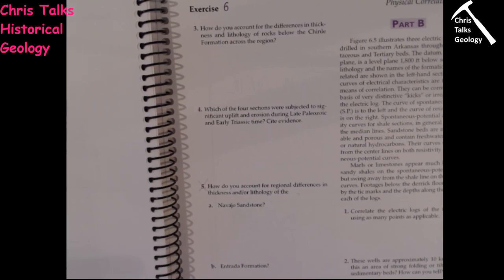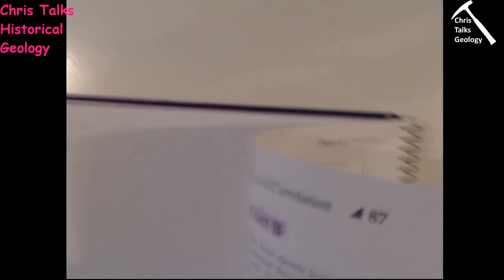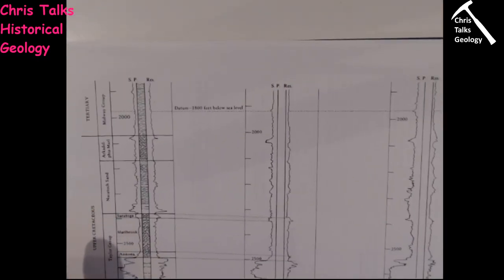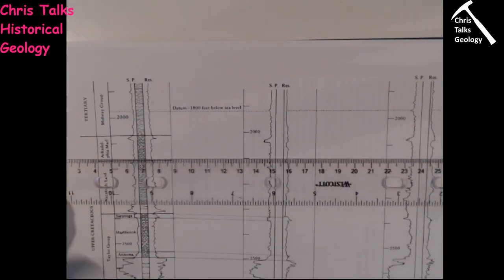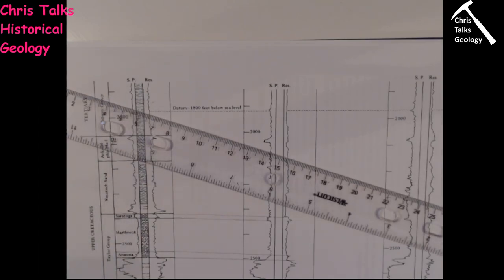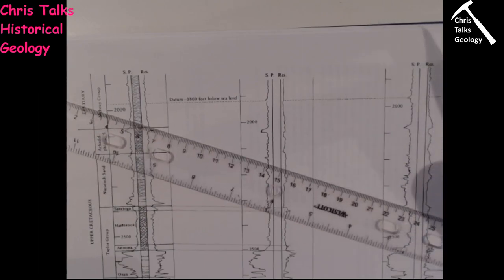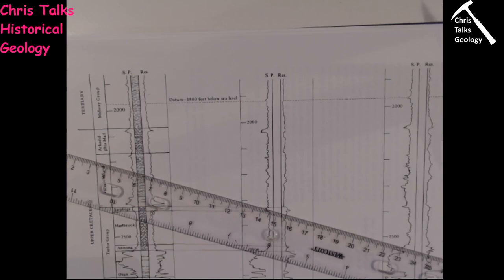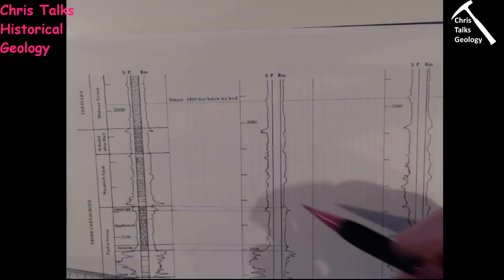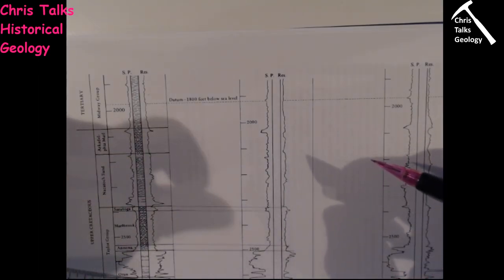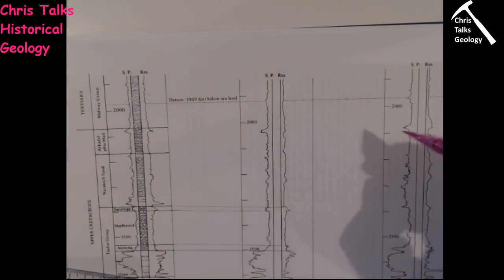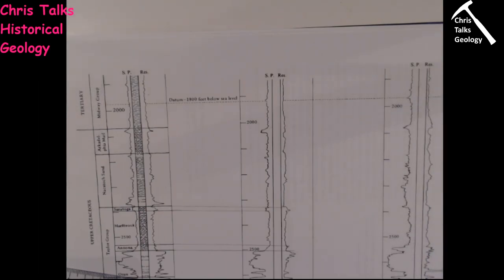These wells are approximately 10 kilometers apart. Question 2: is this an area of strong folding or tilting of sedimentary beds, and how can you tell? When a layer of rock is laid down it's laid down horizontally; if it's tilted, it will have dip. As you draw the horizons across, look and see whether there's significant dip in the beds — that would suggest tilting. Also look for beds going up and then coming down, or vice versa, which is what you'd see with folding. If you don't see major tilting or folding, then the answer is no.